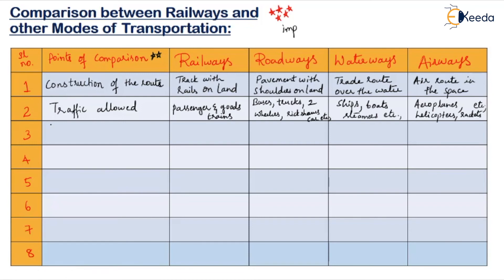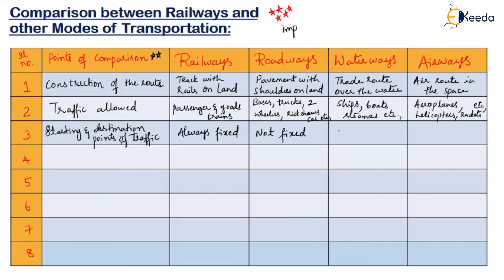The third point is the starting and destination point of traffic. In railways, the starting and destination points are always fixed — you cannot change the railway stations. In roadways, they are not fixed. In waterways, they are generally fixed, though sometimes there is allowance to change. In airways, again they are always fixed.